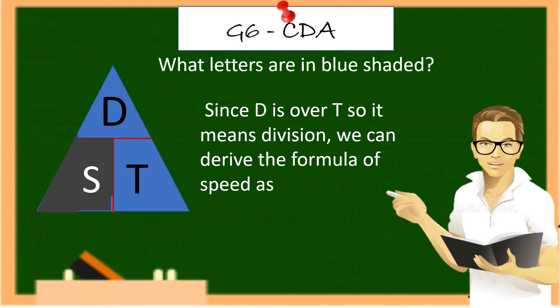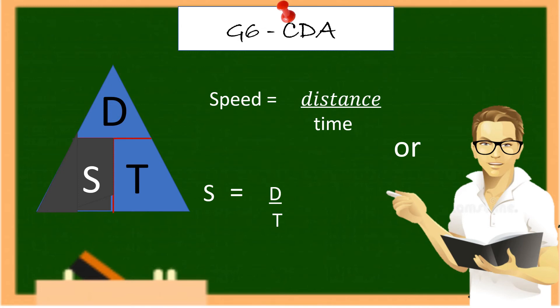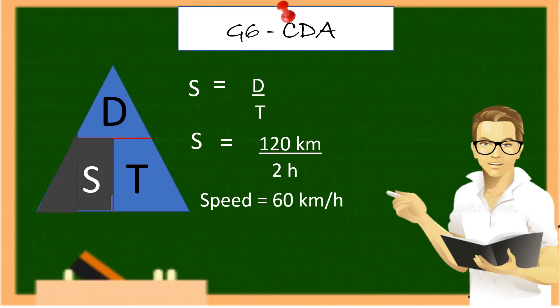What letters are in blue shaded? Since D is over T, so it means division, we can derive the formula as speed equals distance over time or S equals D over T. S equals D over T equals 120 kilometers divided by 2 hours. So the result is speed equals 60 kilometers per hour. So the answer is the car travels 60 kilometers per hour.